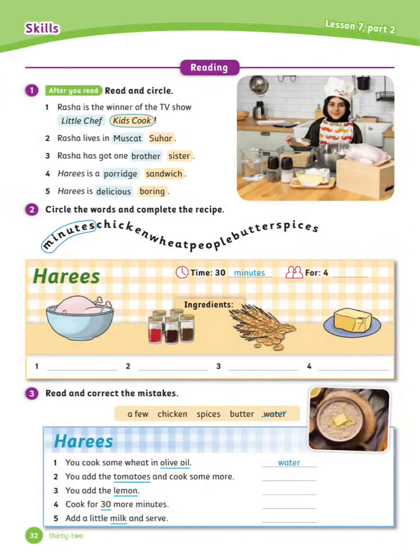Lesson 7, Part 2 — Reading. Exercise number 1: Read and circle. Go to your class book and read about Russia and her favorite food, then answer these questions. Now let's see the answers. Number 1 is done for you: Russia is the winner of the TV show Kids Cook.